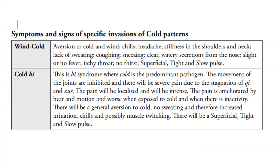In cold Bi — a Bi syndrome where cold is the predominant pathogen — the movement of the joints are inhibited and there will be severe pain due to stagnation of qi and blood. The pain will be localized and intense. The pain is ameliorated by heat and motion and worse when exposed to cold and when there is inactivity. There will be a general aversion to cold, no sweating, increased urination, chills, and possibly muscle twitching, with a superficial tight and slow pulse.